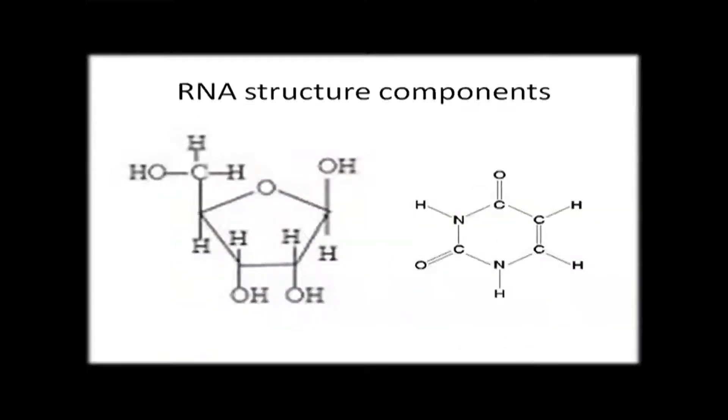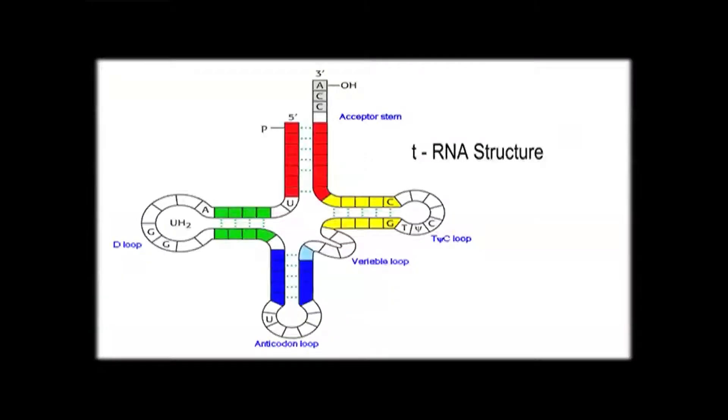This is the uracil base, which is not present in case of DNA. So by transcription from double-stranded DNA, you can follow the production of single-stranded RNA with the help of enzyme RNA polymerase — a process called transcription. This is the secondary cloverleaf structure of tRNA.